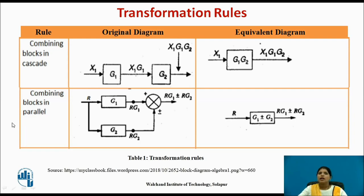The next rule is combining blocks in parallel. Here G1 and G2 blocks are connected in parallel, so the result is G1 plus or minus G2. If there is a positive sign, we add the blocks as G1 plus G2; if there is a negative sign, we get G1 minus G2.